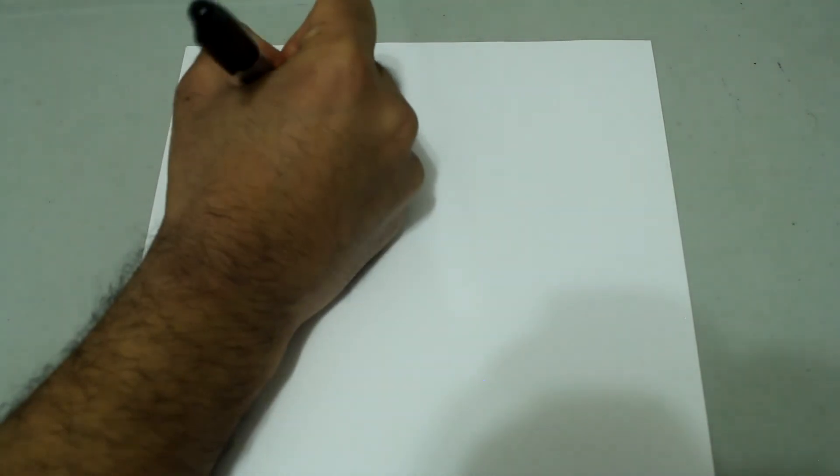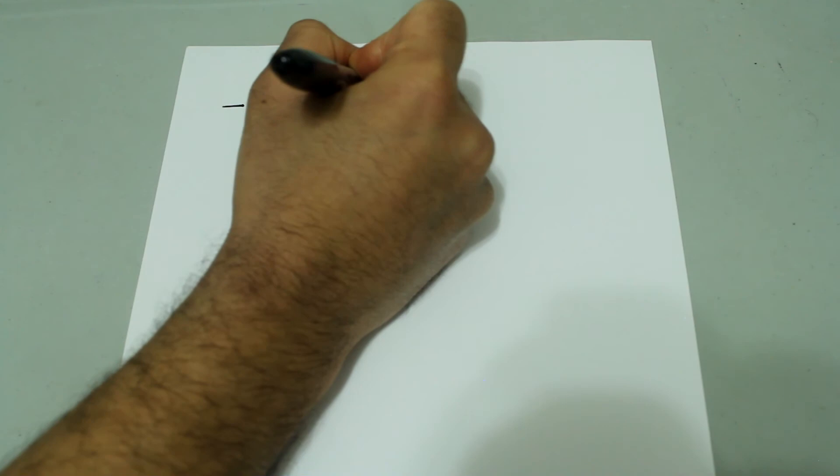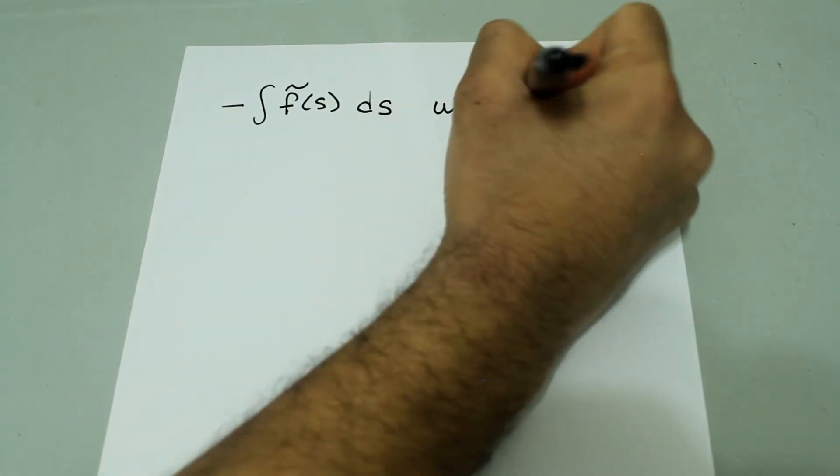Now, I want to show you another way of thinking about it. Evaluating the upper bound gives us 0. So, we get 0 minus the integral evaluated at s. A quick way to think about it is the negative integral of f tilde of s ds without the plus c. There is no plus c.